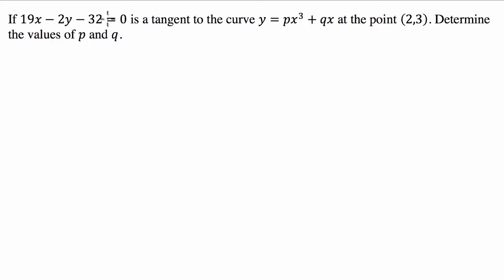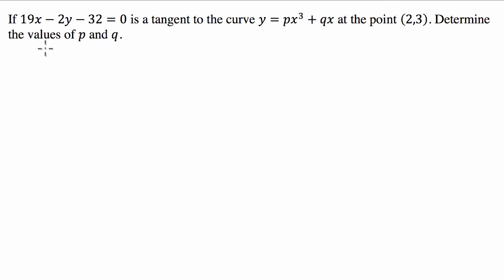G'day guys, we've got a calculus question today. We've been given the line 19x minus 2y minus 32 equals 0, and we're told that it's tangent to the curve y equals px cubed plus qx at the point (2, 3). We're asked to determine the values of p and q.